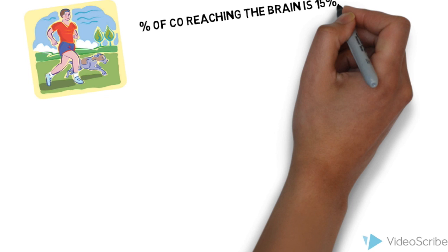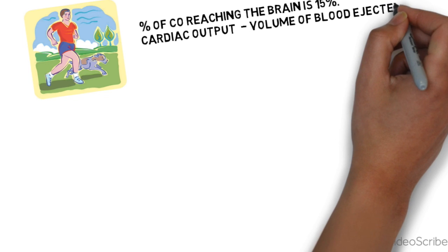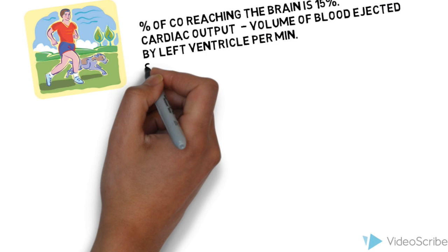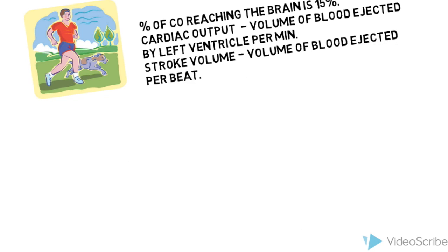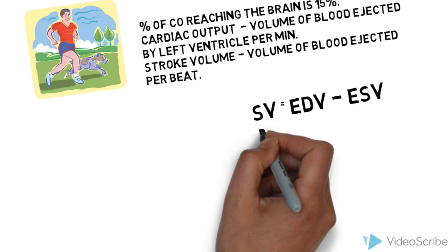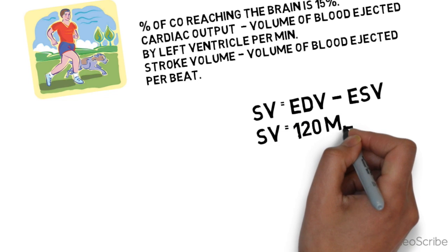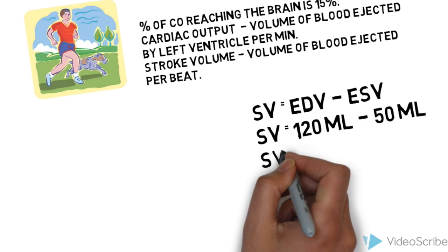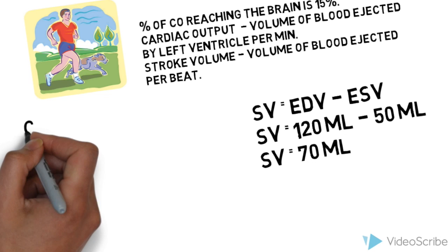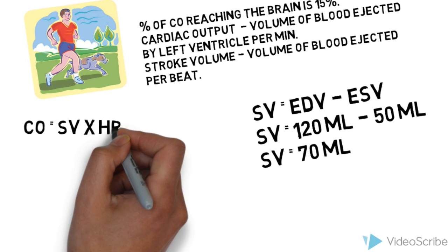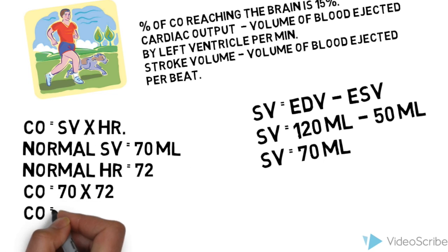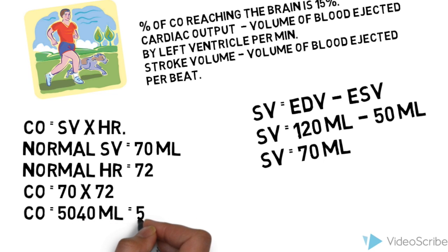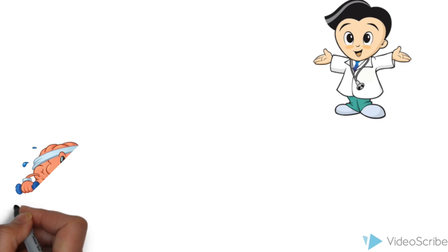To get the absolute value, we have to know what cardiac output and stroke volume are. Cardiac output is the volume of blood ejected by the left ventricle per minute. Stroke volume is the volume of blood ejected per beat, and is equal to end-diastolic volume minus end-systolic volume, which is 120 ml minus 50 ml, giving a stroke volume of 70 ml. Cardiac output equals stroke volume times heart rate, which is 70 ml times 72 beats.